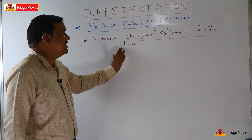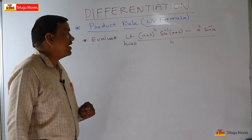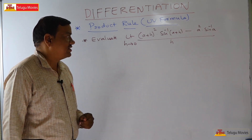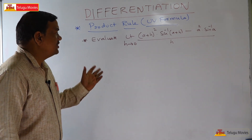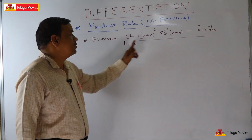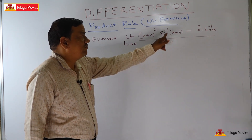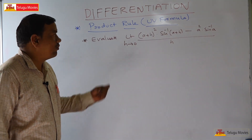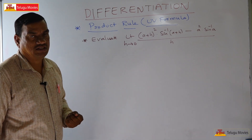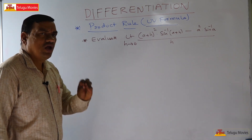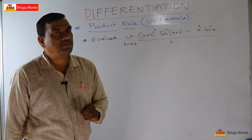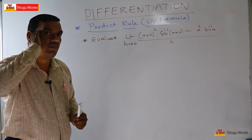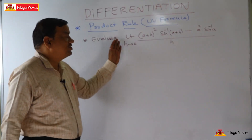Welcome to this problem. Limit h tends to 0, of a plus h whole square into sin inverse of a plus h minus a square into sin inverse of a, upon h. If we substitute h equal to 0, we get 0 by 0. We can do L'Hôpital's rule, but there is a very simple logical step. Looking at this, does any formula strike our mind? Whenever limit h tends to 0 appears, there is a formula.